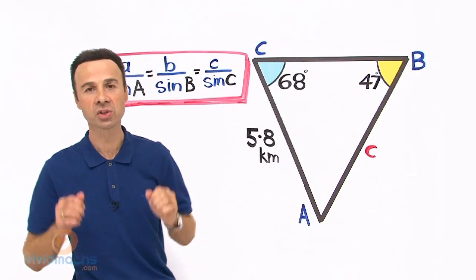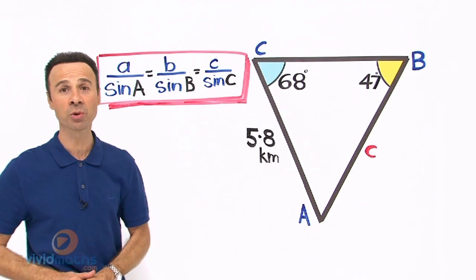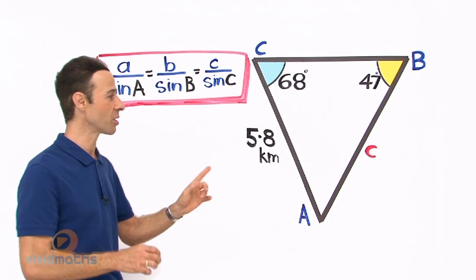We are going to use the sine rule. We are going to substitute into this formula, then we are going to cross multiply, and then we are going to shoot through to the solution which is little c.